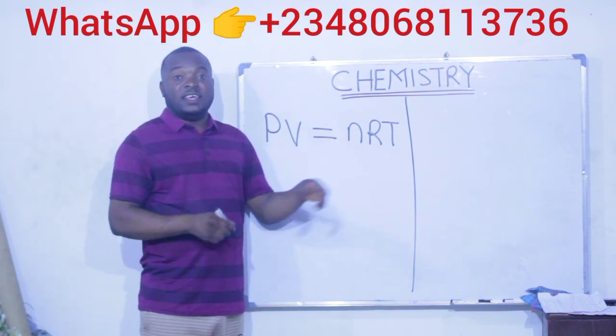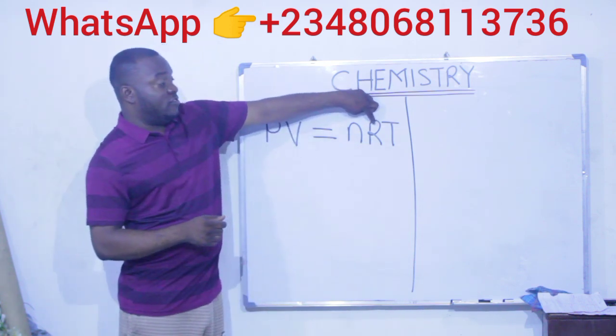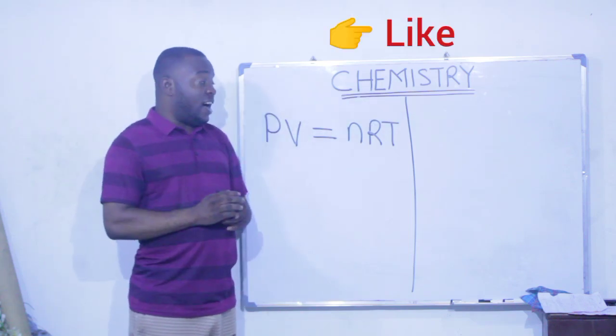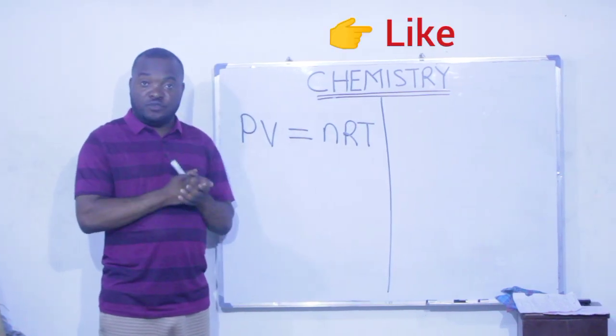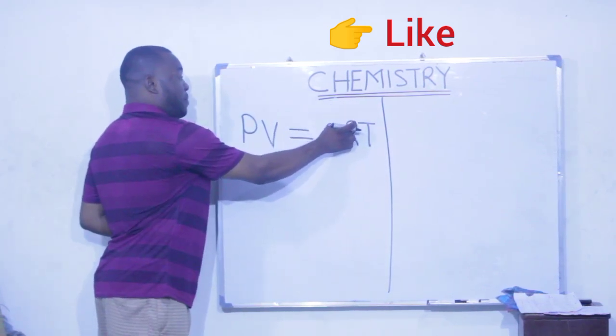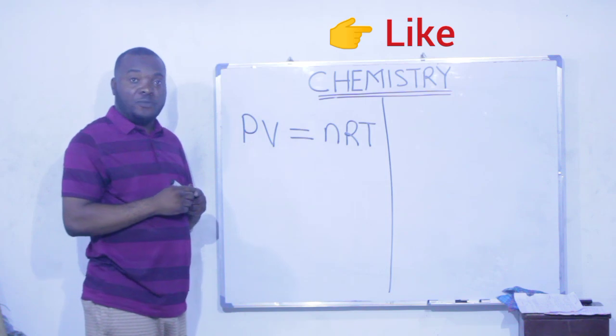We are asked to find the value of R which is the universal gas constant for one mole of a gas at standard temperature and pressure, STP. Now let's begin by making R subject of the formula.